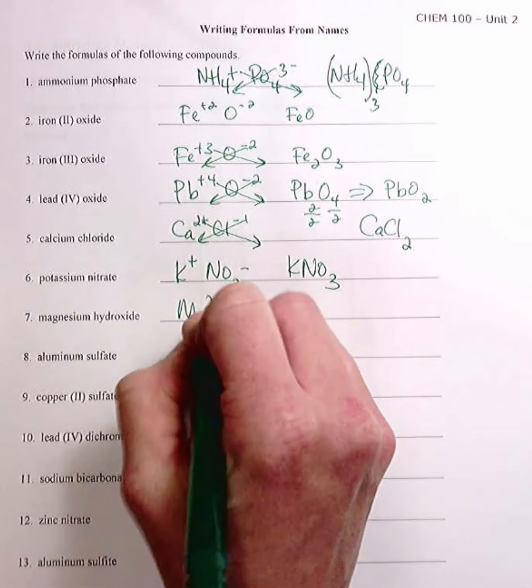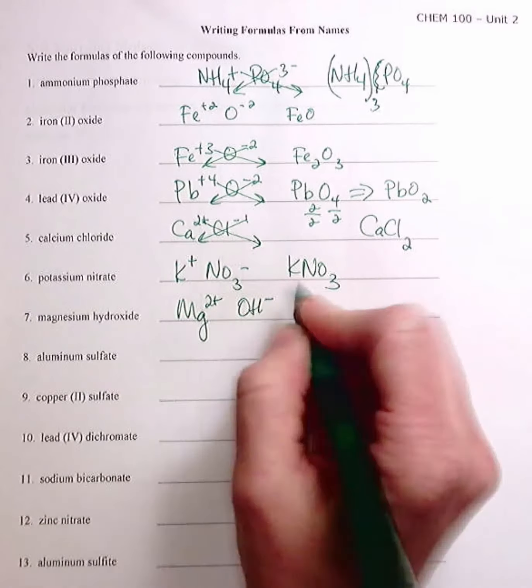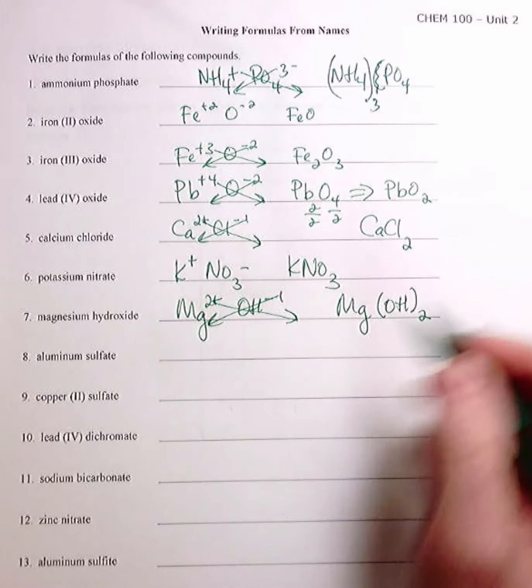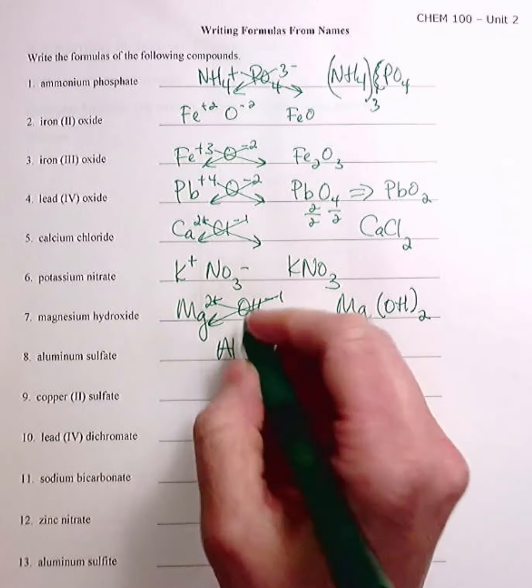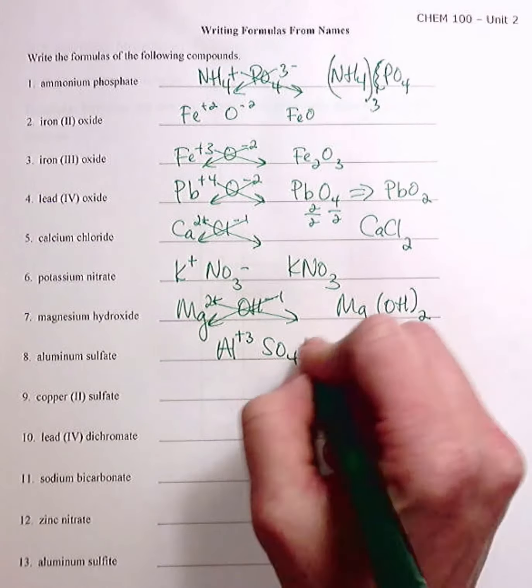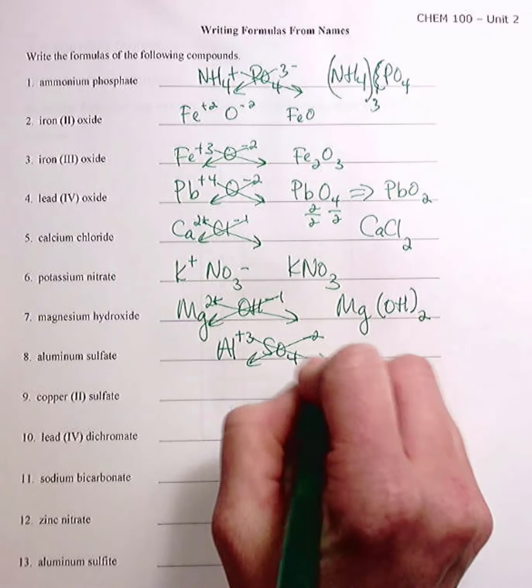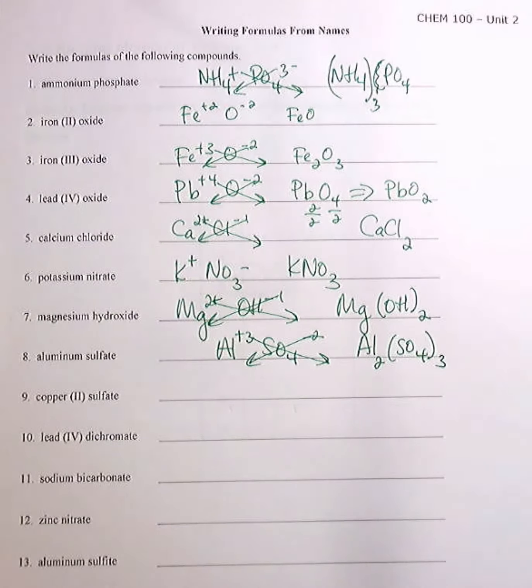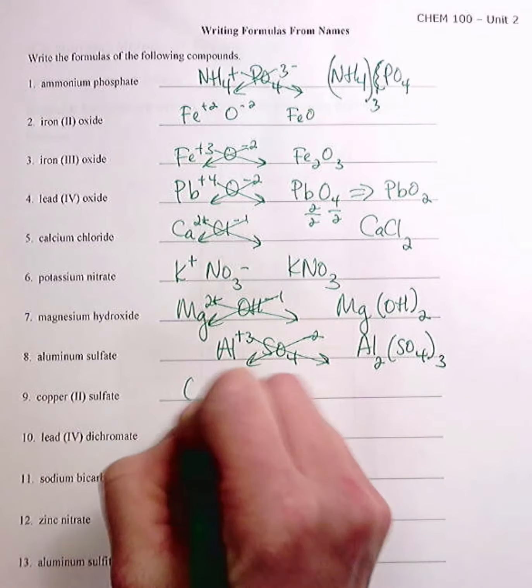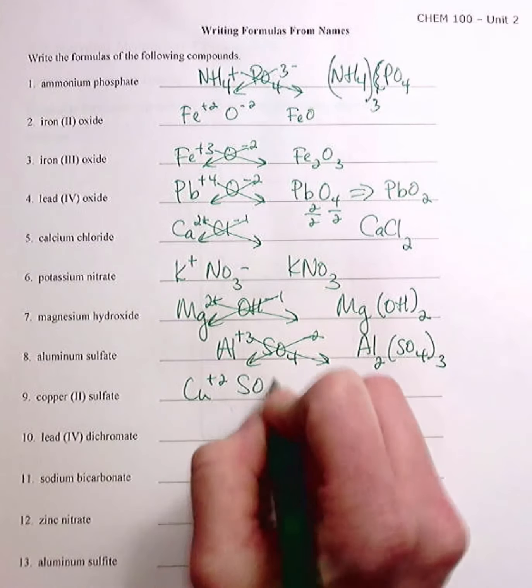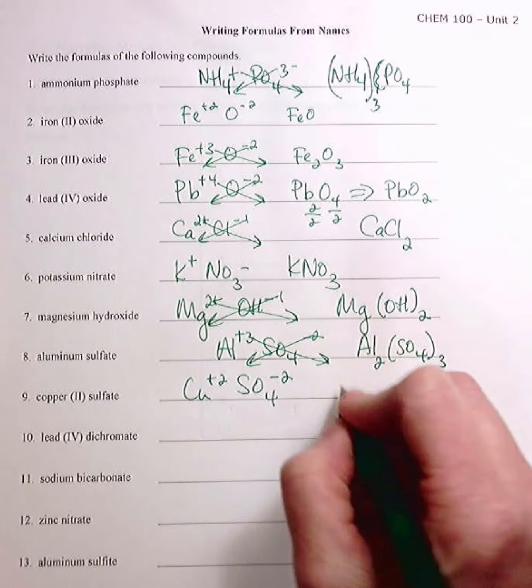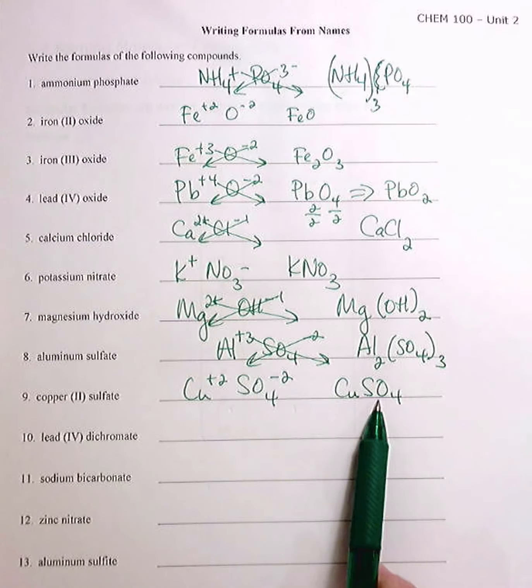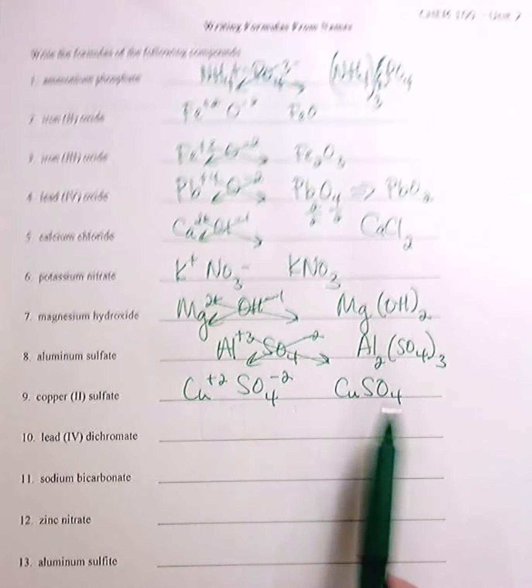Magnesium hydroxide, so Mg parentheses OH2, aluminum sulfate. All right, copper sulfate, that's just one to one, CuSO4. Again, no parentheses are required because only one polyatomic ion is used.